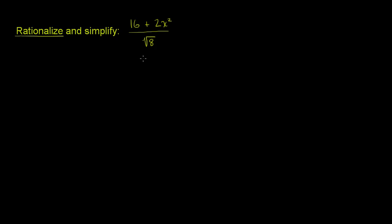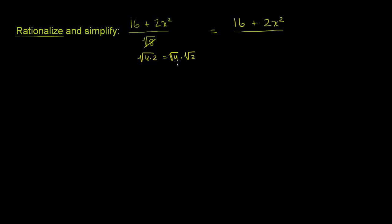The first thing we can do is simplify a little bit and then rationalize. The principal square root of 8 can be simplified, because 8 is the same thing as the square root of 4 times 2, which is the same thing as the square root of 4 times the square root of 2. So we can rewrite this entire expression with numerator 16 plus 2x squared, all over the square root of 4 times the square root of 2. The principal square root of 4 is just 2, so square root of 8 becomes 2 times the principal square root of 2.